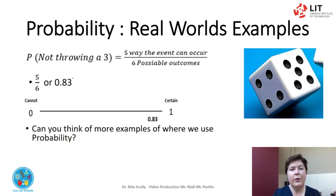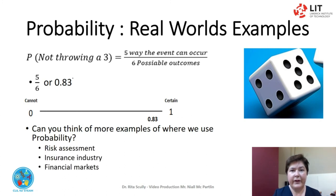Can you think of more examples where we can use probability? Probability theory is applied in everyday life in risk assessment and modelling of potential events or outcomes. The insurance industry and the financial markets use probability in determining the risk level of an event.